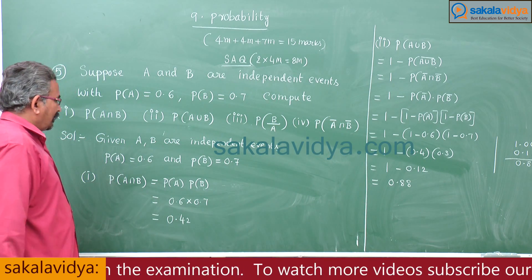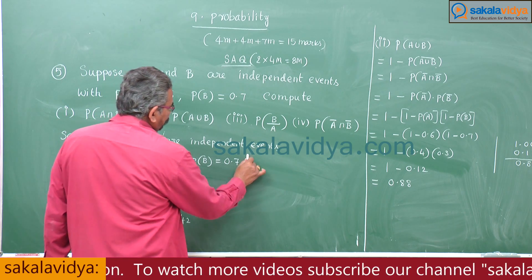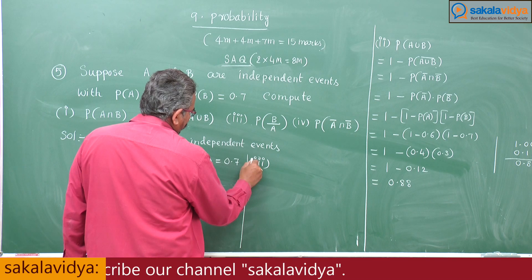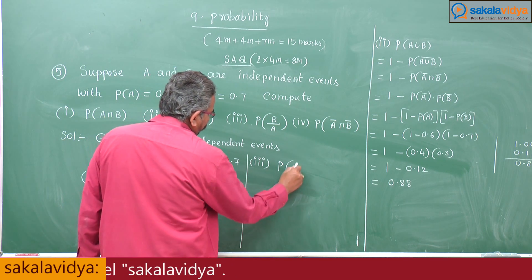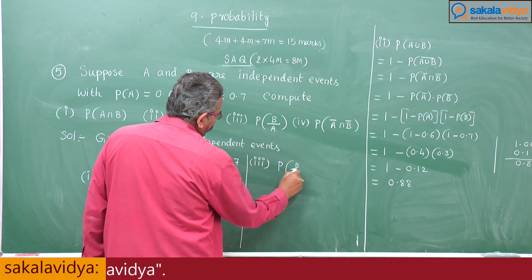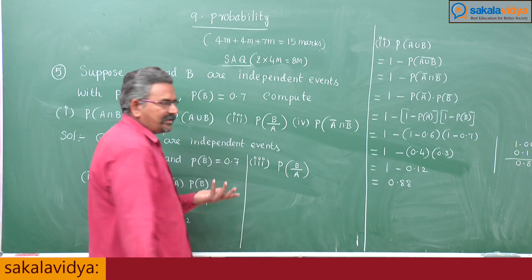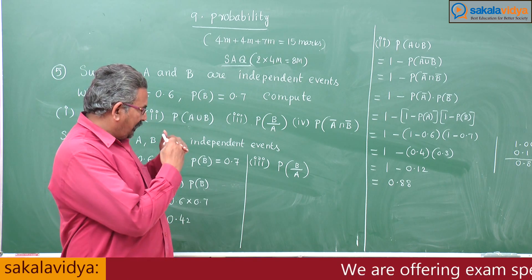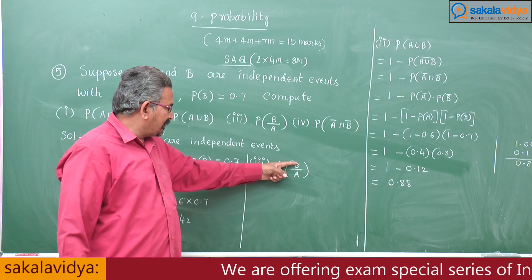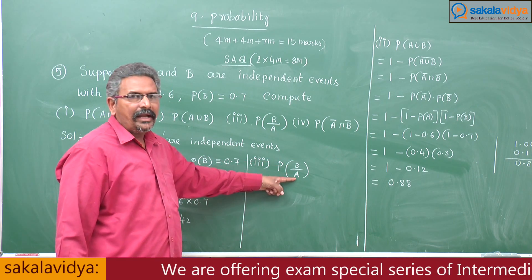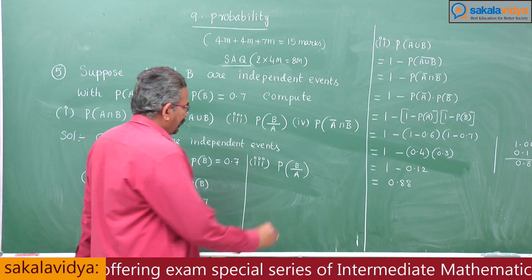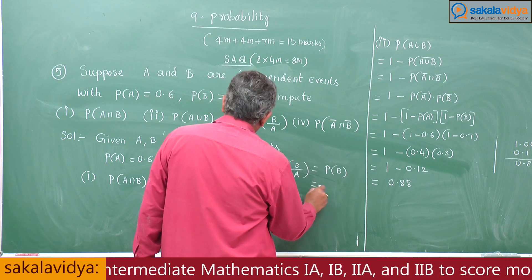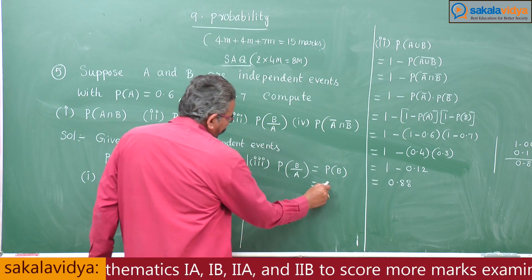Third one: P(B conditioned on A). Since A and B are independent, B does not depend on the happening of A. That is why P(B|A) is equal to P(B), which is already given as 0.7.